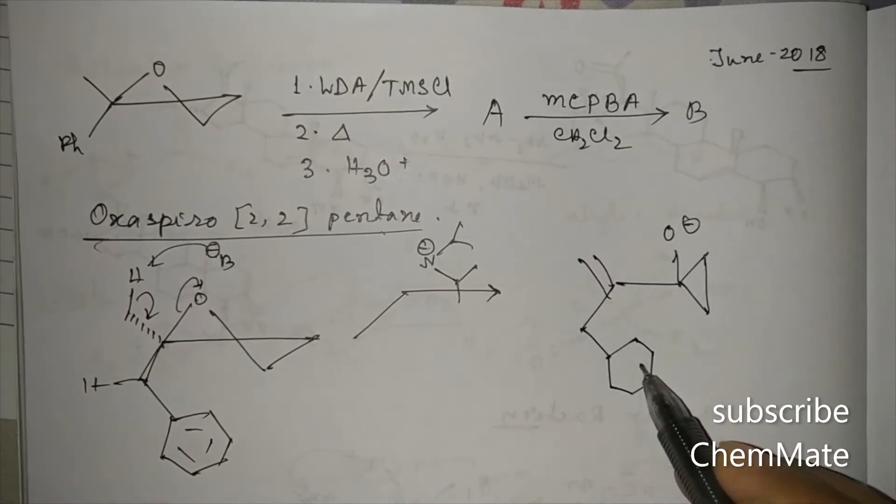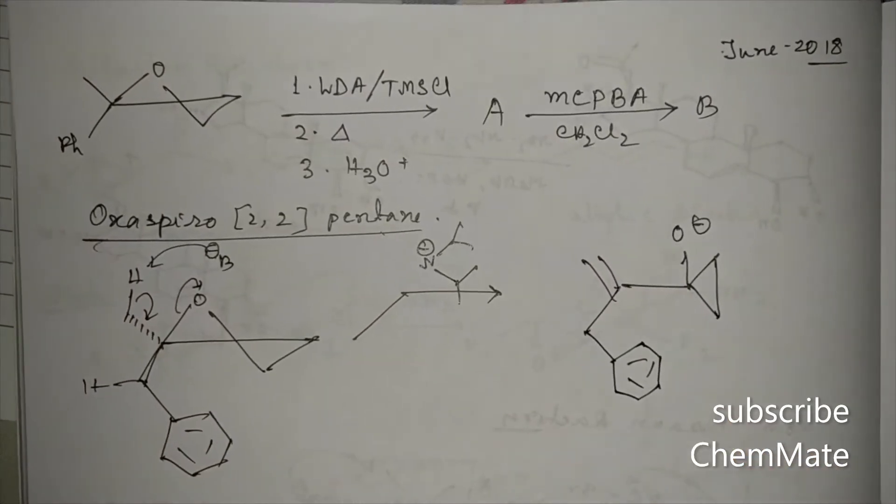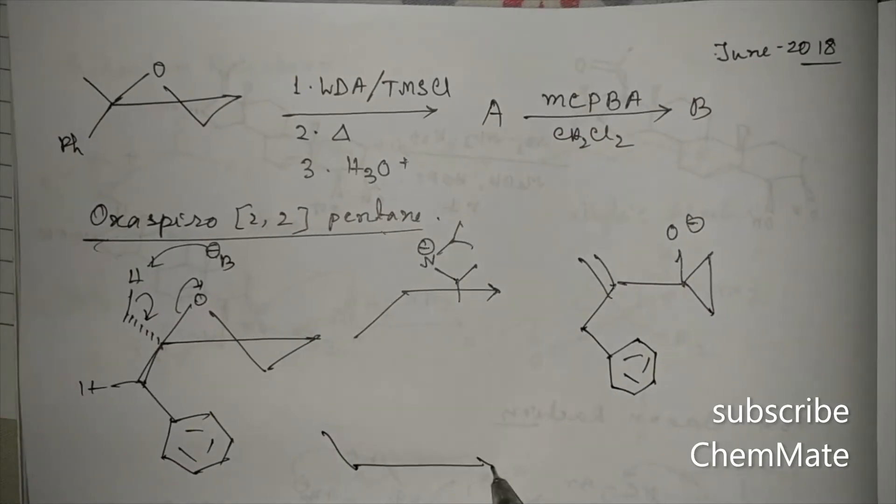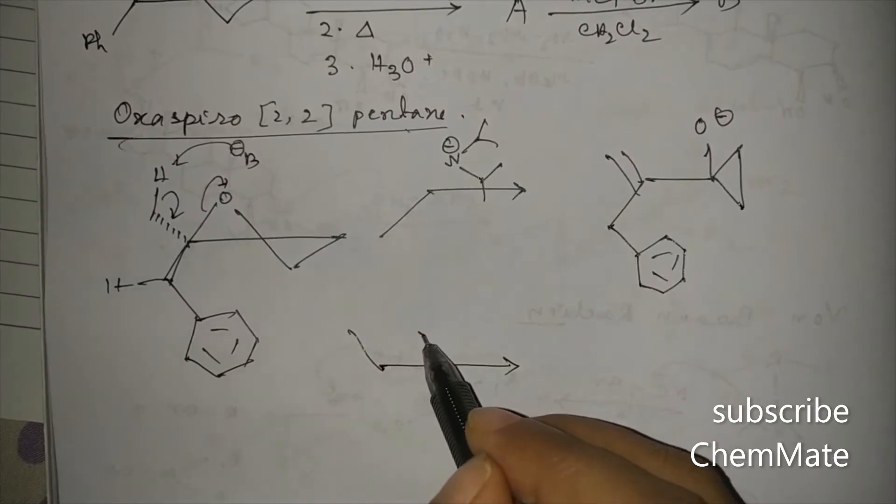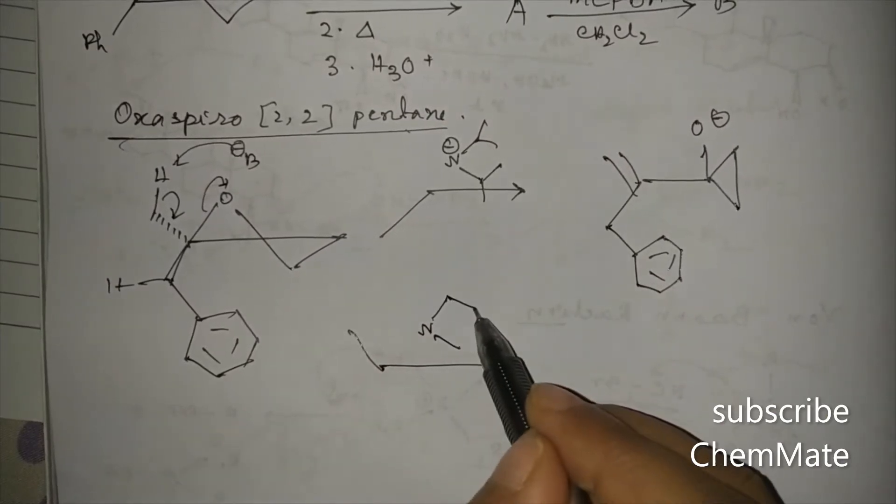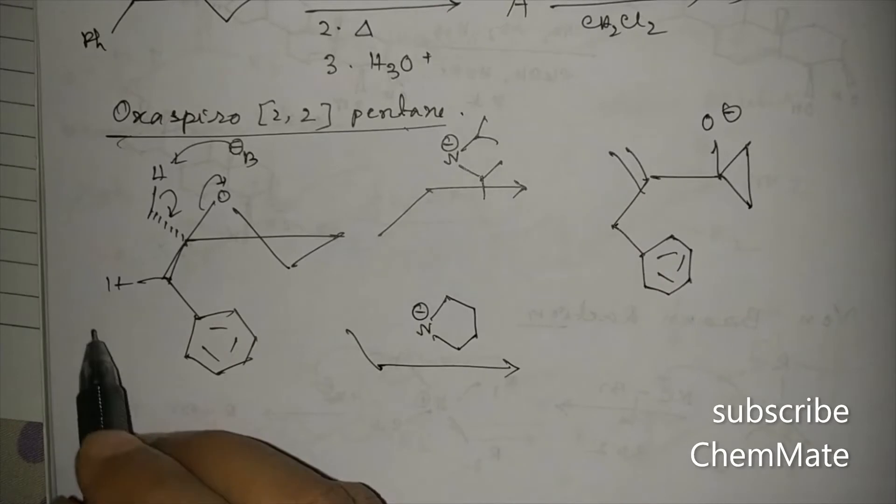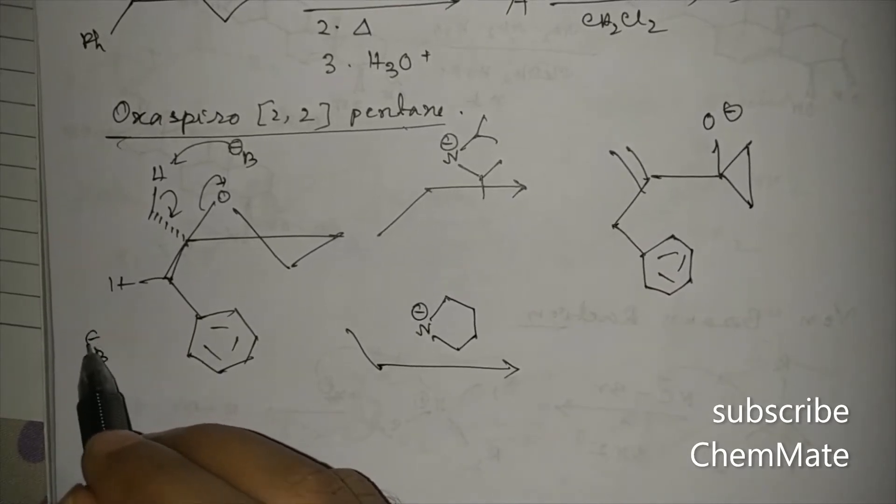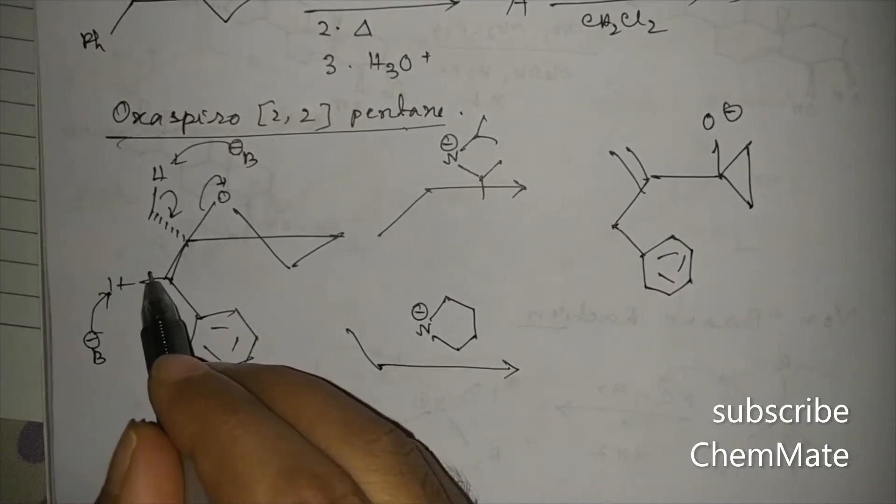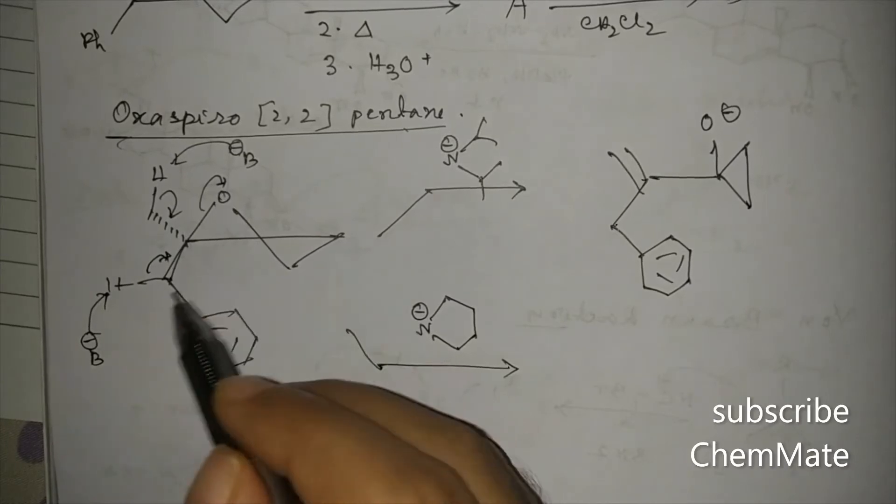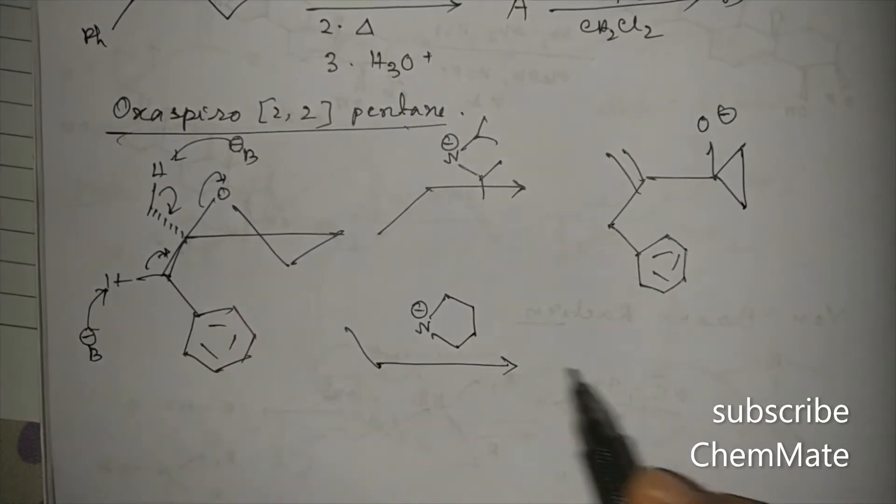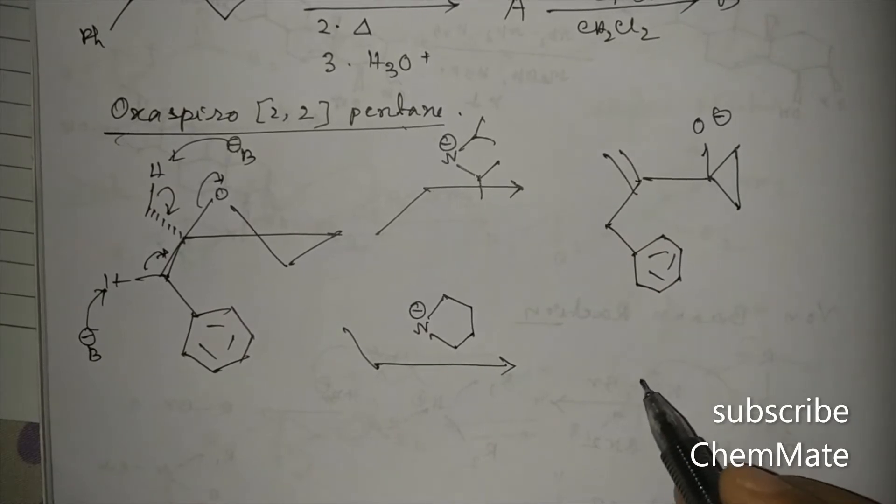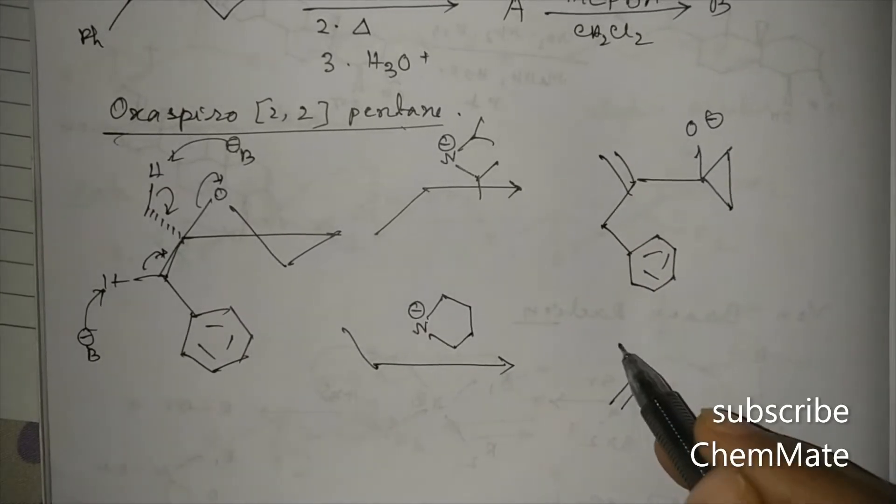And again, if it is treated with another base, that is amide of pyrrolidine, this will take this proton and this type of ring opening reaction will happen so that here the more substituted alkyne will be formed and the product will be